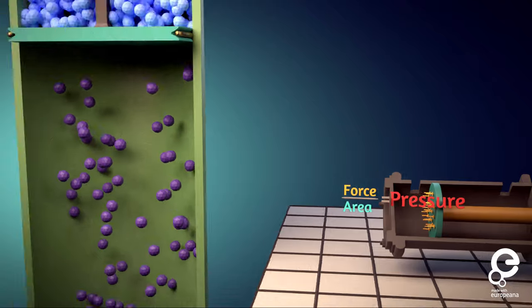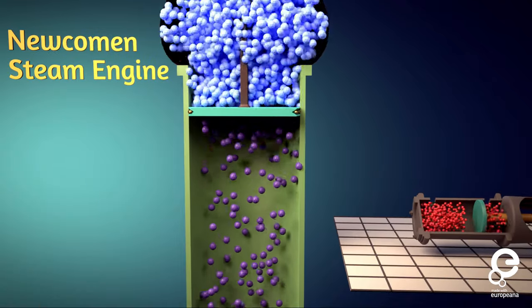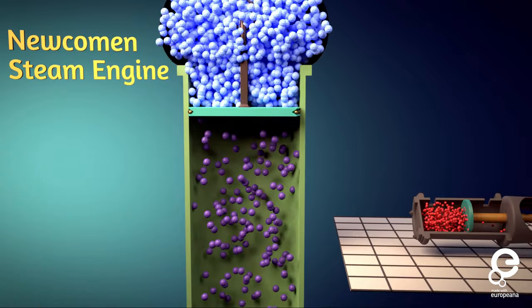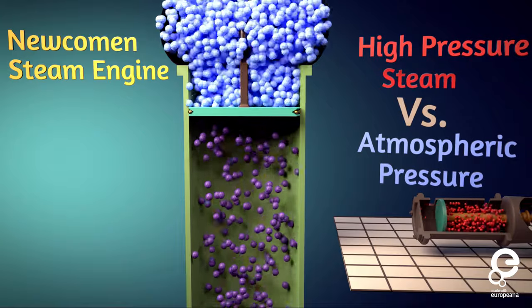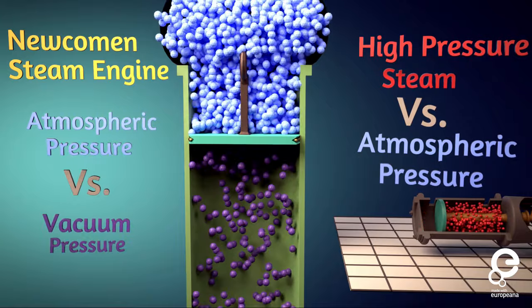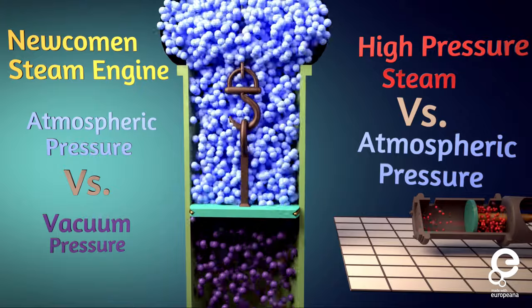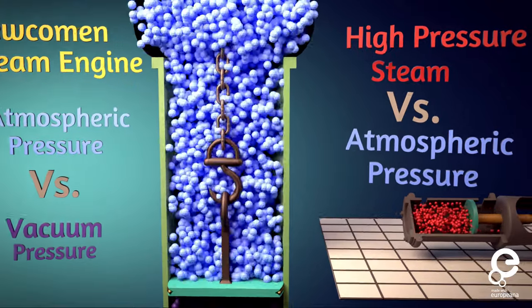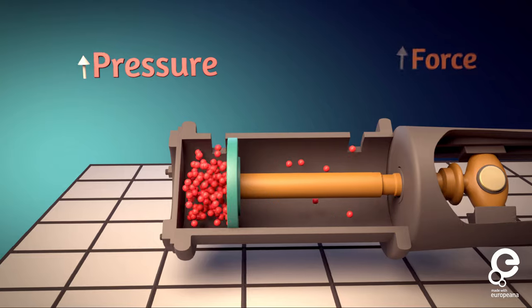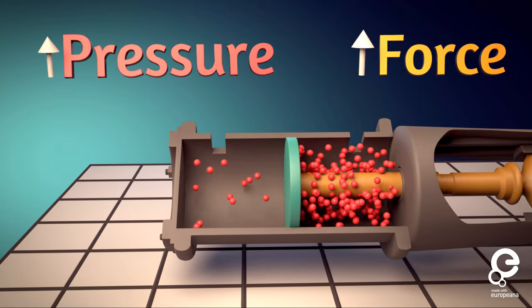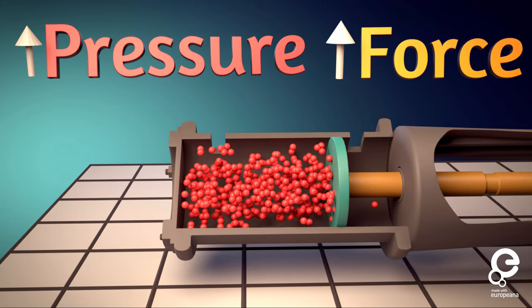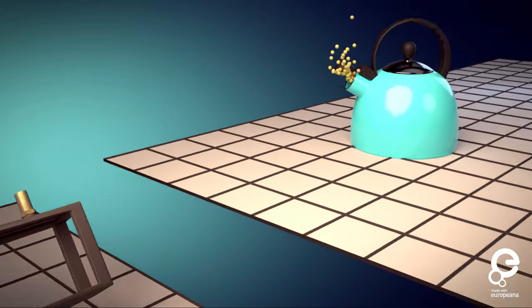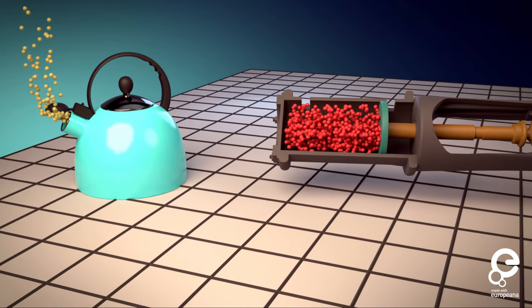This kind of seems like the Newcomen engine in the previous episode, doesn't it? However here, the power is generated from high pressure against the atmosphere, compared to atmosphere against a vacuum with the Newcomen engine. So in this engine, if you increase the pressure, then you'll have more force on the piston to use during the power stroke. So how do we take regular steam from boiling water and turn it into high pressure steam?